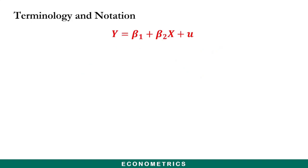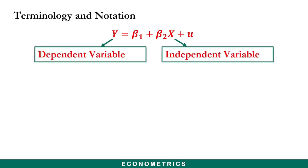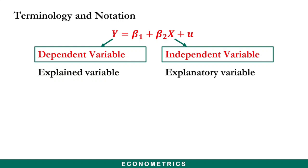Now there are some terminologies that we need to look at. In an econometric model we are familiar with the terms dependent variable and independent variable. However, there are other terms used to describe these two types of variables. The dependent variable can be called the explained variable, while the independent variable can also be called the explanatory variable.